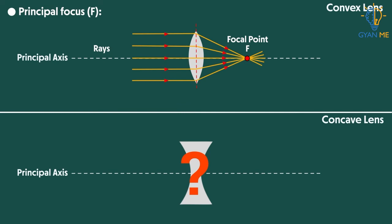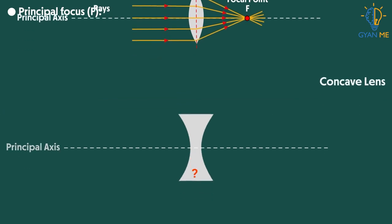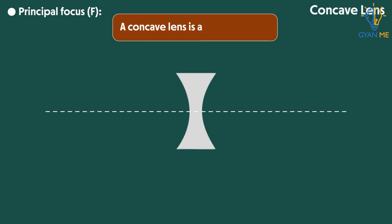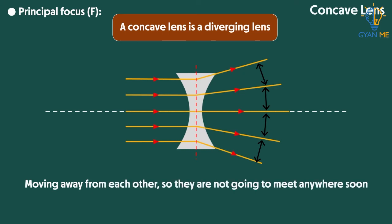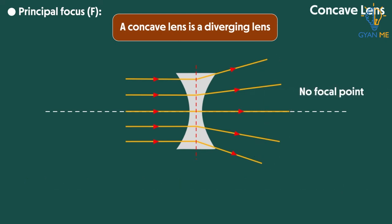Now what about this diverging lens? Yes, we also know that concave lens is a diverging lens. So it bends light rays in such a way that they diverge from each other. This means they are moving away from each other and they are not going to meet anywhere soon. At least not on this side. This means there is no focal point here.